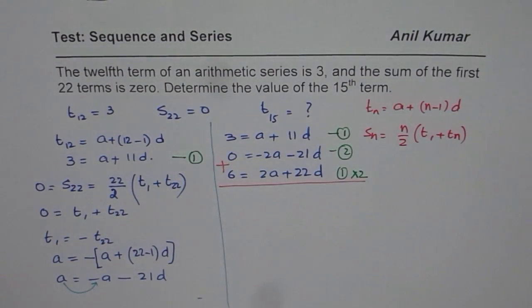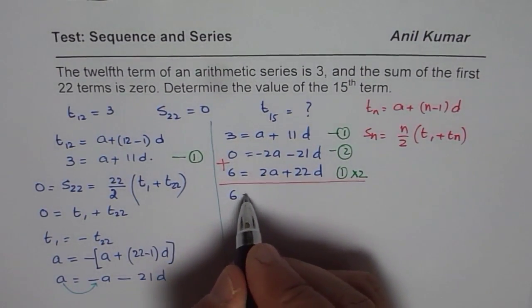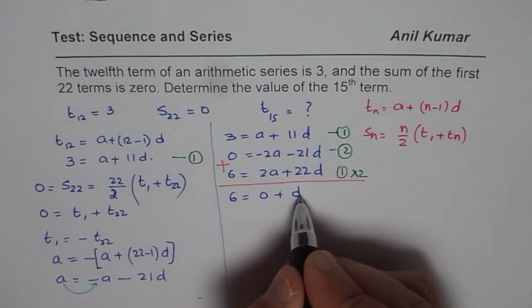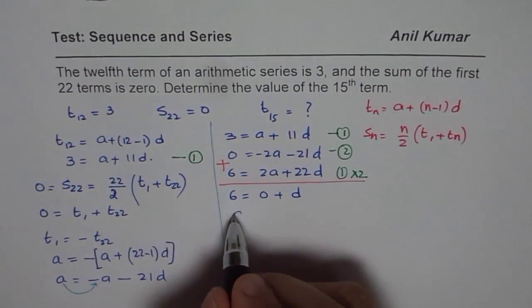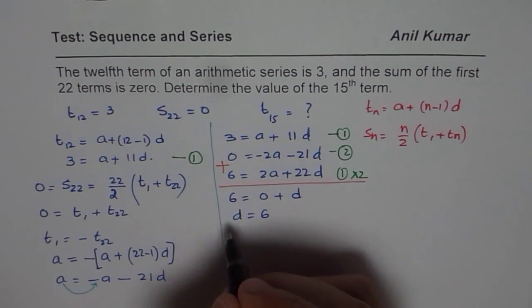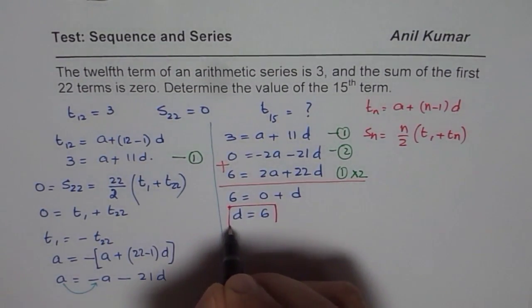So if I add them up, so I get 6 plus 0 is 6 equals, when I add them up, I get D. So I get D equals 6. Do you get the point? So D is 6 for us. So we have found the value of D, which is 6.